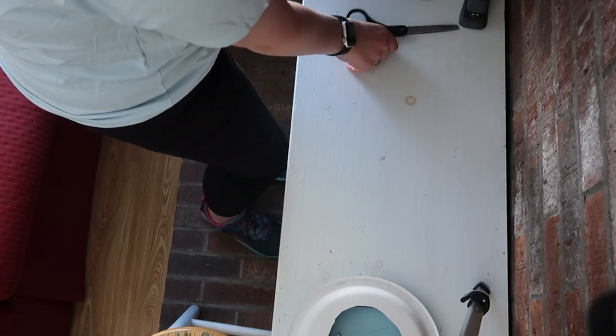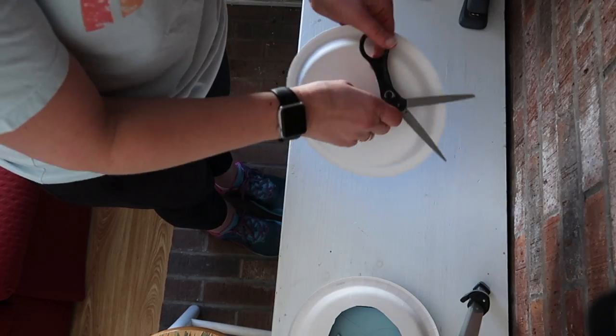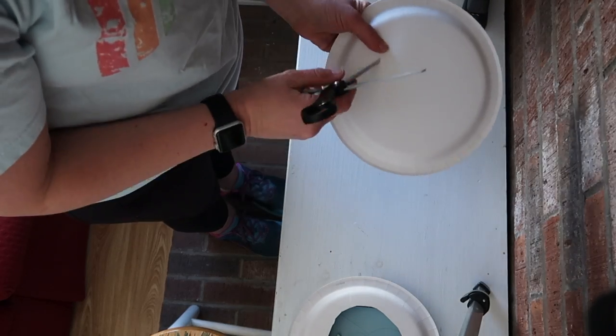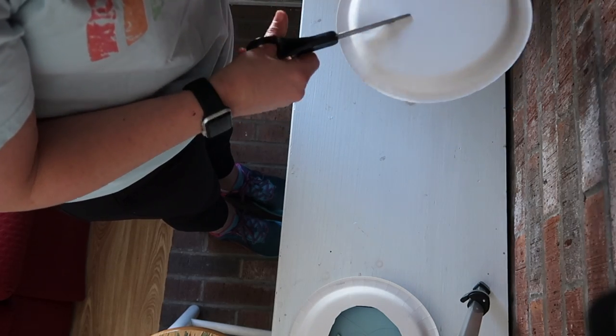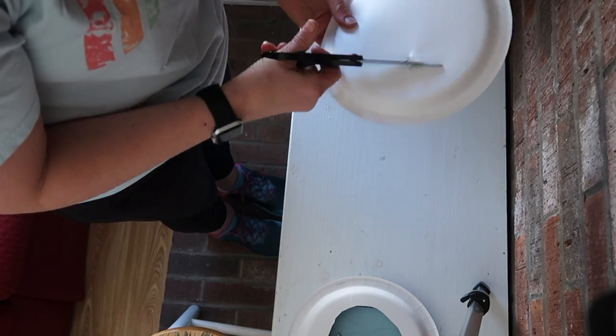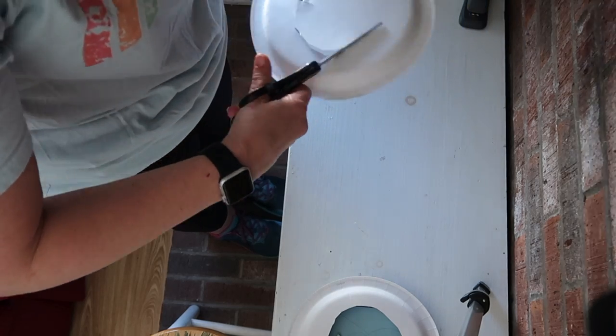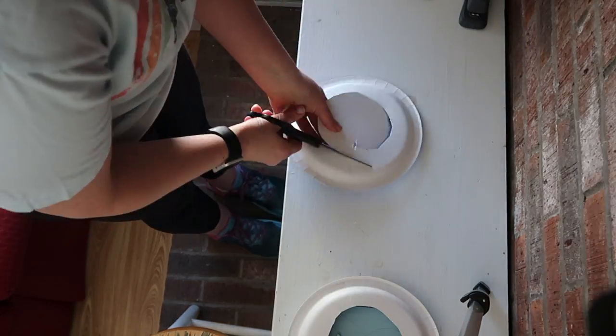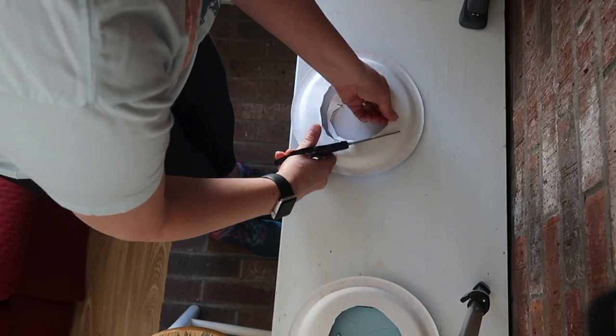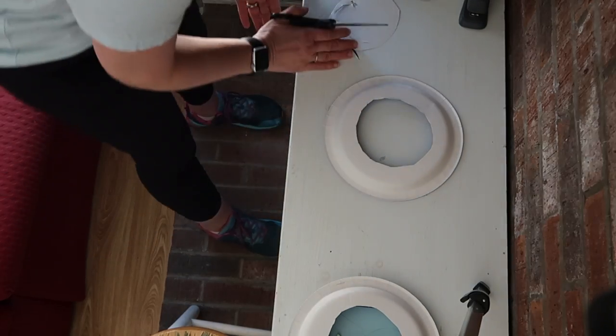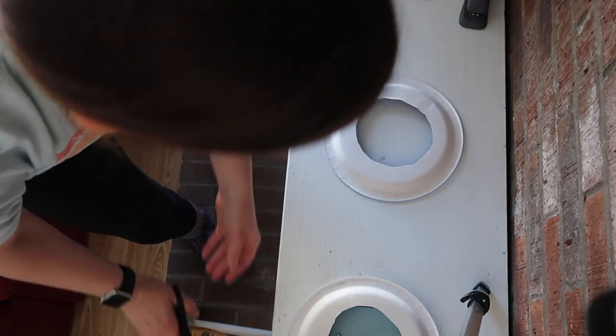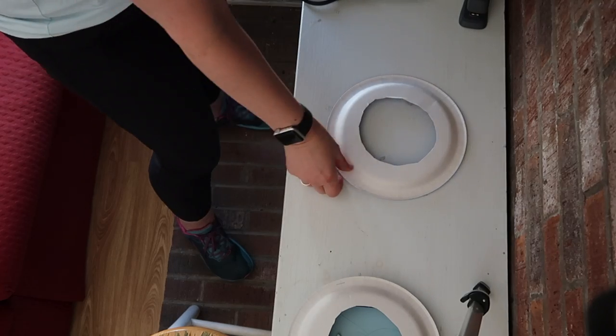Grown-ups, this is definitely a part where all the little ones are definitely going to need help, is cutting the big circle in the fish tank. Even grown-ups need help a little too. All right, put the scrap paper aside, never know when we need that again.